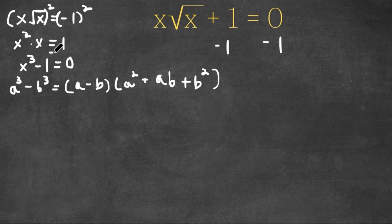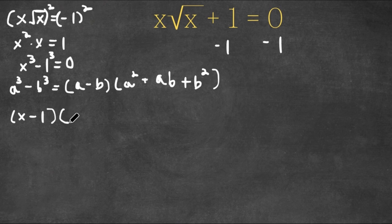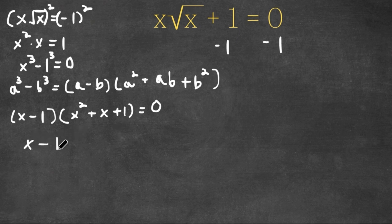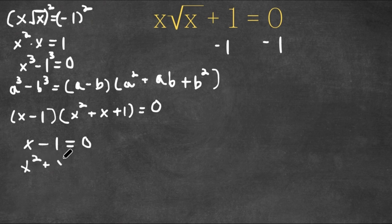Since 1 is the same thing as 1 to the power of 3, if we plug in our values, we get x minus 1 times x squared plus x times 1 — which is just x — plus 1 squared, which is 1, and now this is still equal to 0. This gives us two equations: x minus 1 equals 0, and x squared plus x plus 1 equals 0.